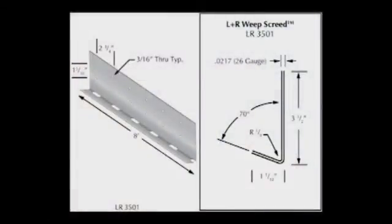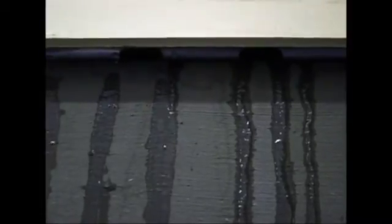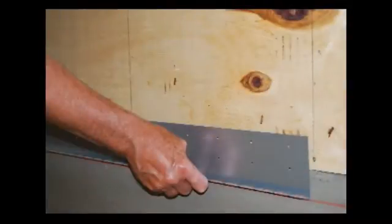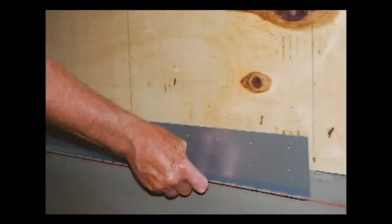The L&R Weep Screed is the only bottom termination on the market that actually weeps, providing effective drainage capacity with large 1-inch slots placed frequently along the bottom edge. The 3.5-inch back flange is a flashing type detail that covers up the construction joint created by the top of the foundation and the bottom of the rim joist plate.